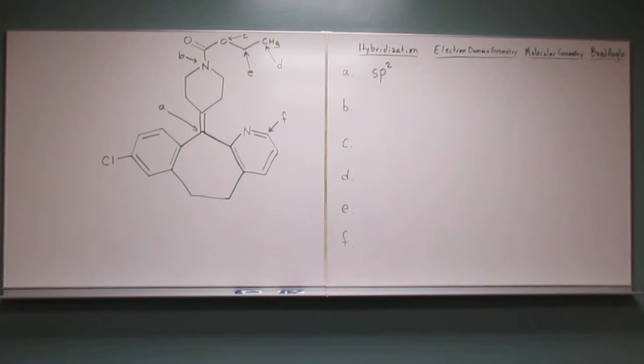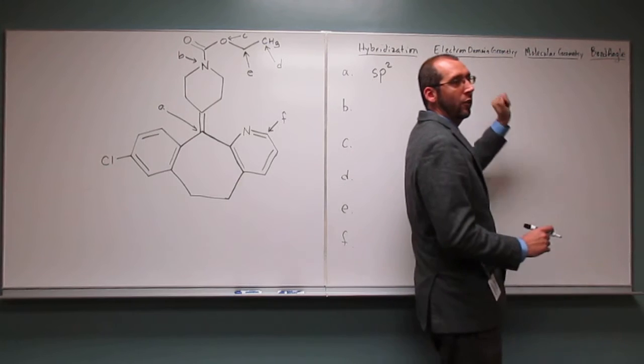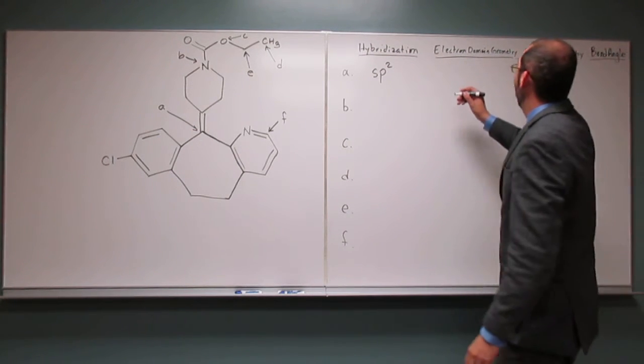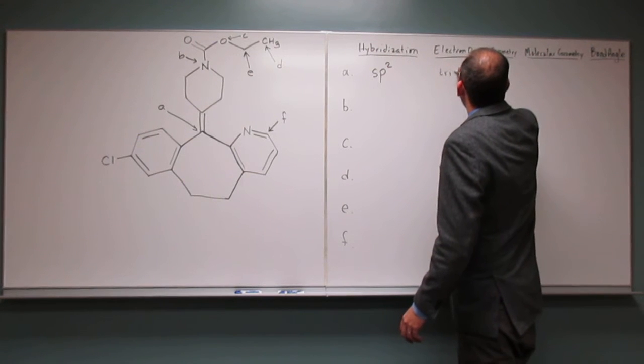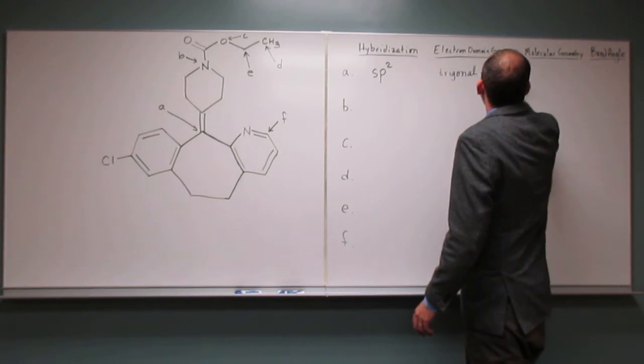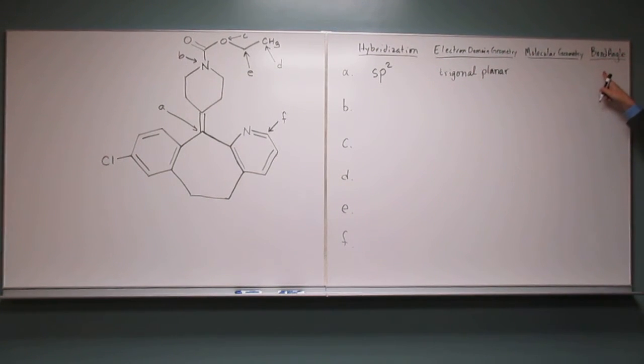Okay, so if we have SP2 hybridization, then what's the electronic domain geometry? The electronic geometry. Trigonal planar. Trigonal planar. So that means the bond angle is what? 120. 120, right?